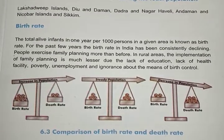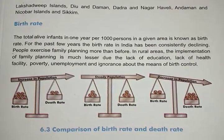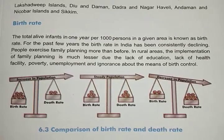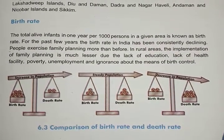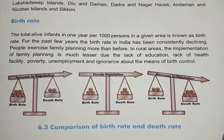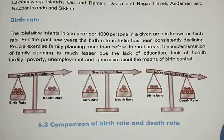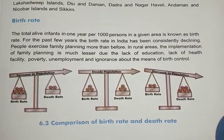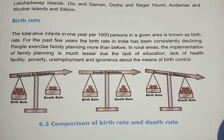In the past few years, the birth rate in India has been consistently declining. India is exercising family planning, which is why it is declining. But in rural areas, implementation of family planning is comparatively lesser than in urban areas due to lack of education, health facilities, poverty, unemployment, and ignorance.